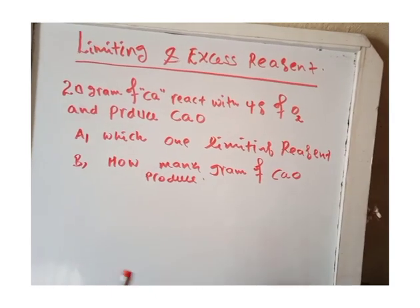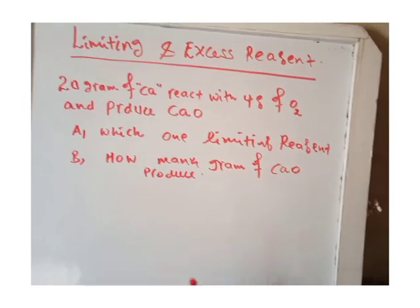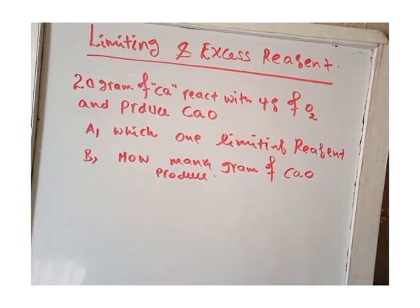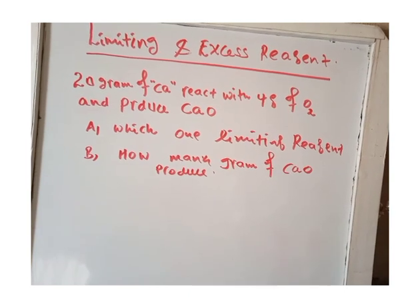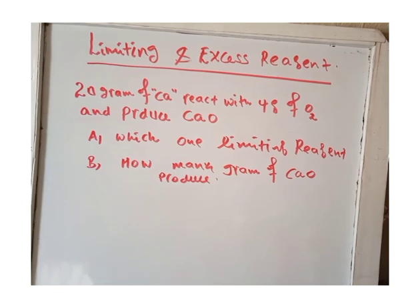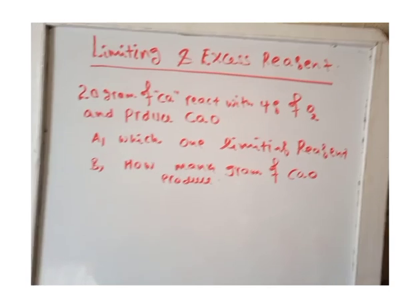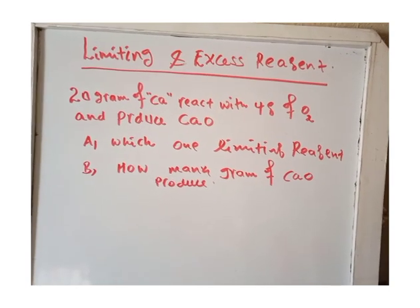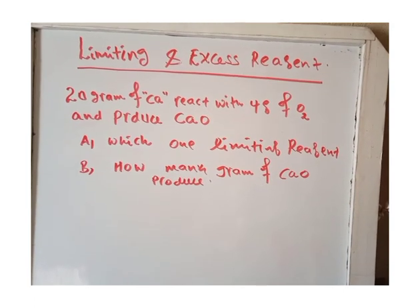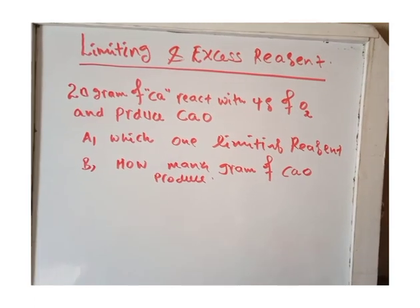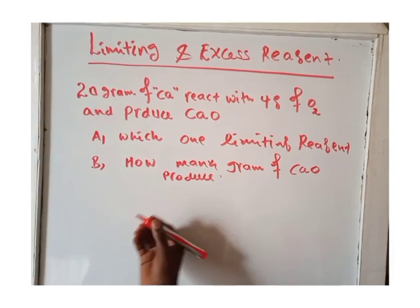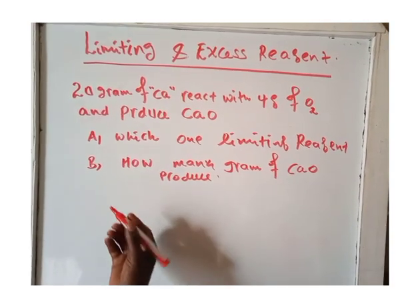Hello guys, today I would like to show a limiting and excess reagent example. 20 grams of calcium metal react with 4 grams of oxygen and produce calcium oxide. Which one is the limiting reagent, and how many grams of calcium oxide are produced?